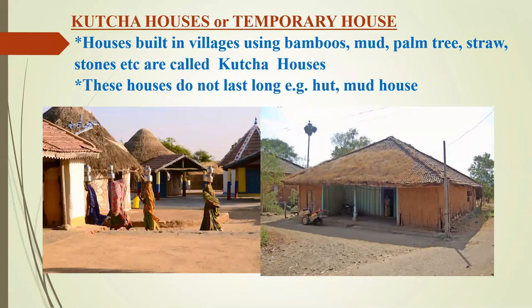Kaccha houses, or temporary houses. Houses built in villages by using bamboos, mud, palm tree, straw, stones, etc. are called kaccha houses. These houses do not last for long. For example, hut and mud house.